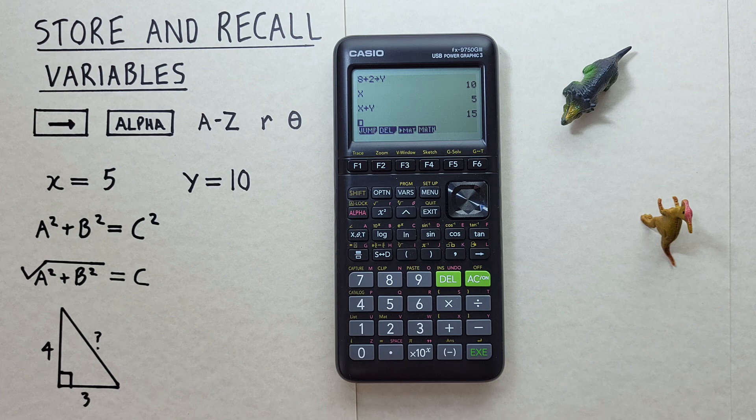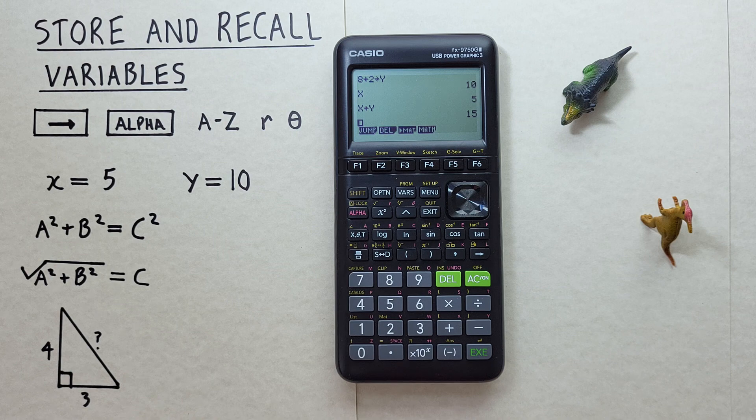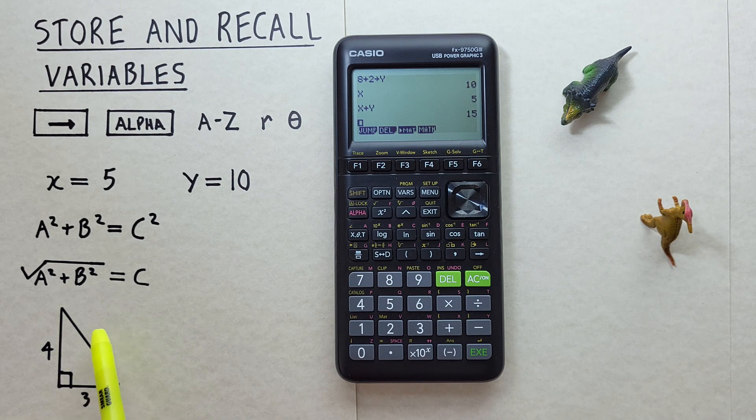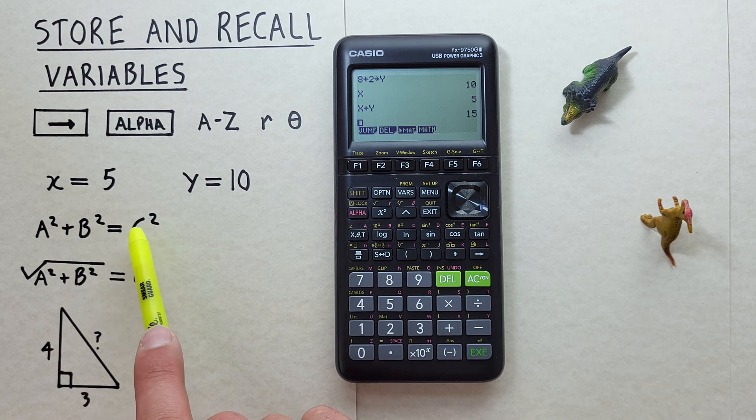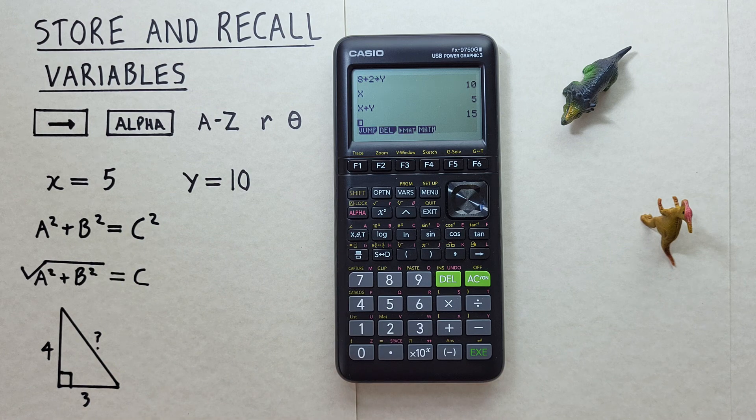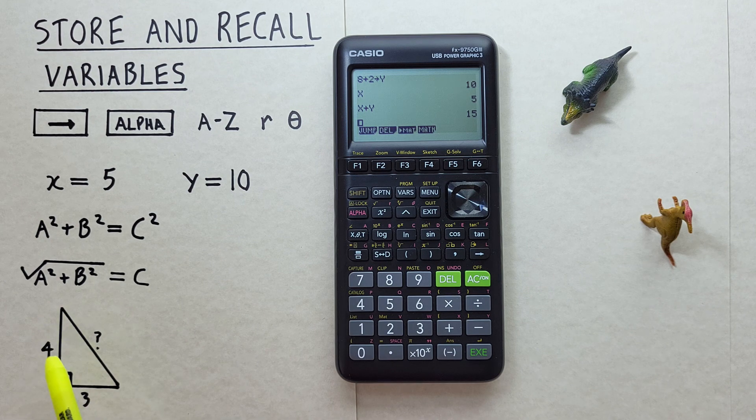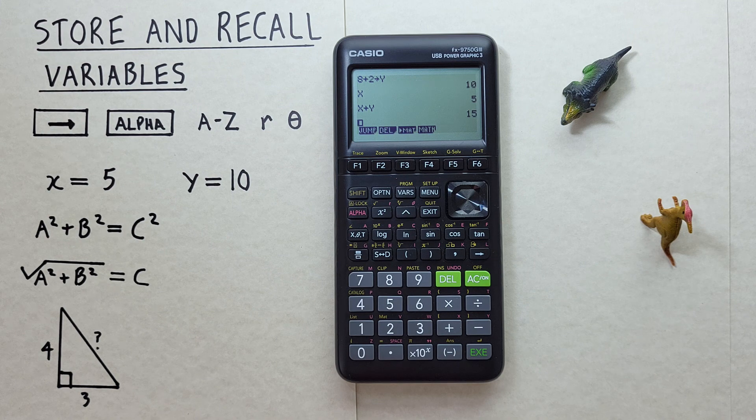This memory function is especially helpful for working with long or complex equations. For example, let's say we wanted to solve this right angle triangle for this side. We know with Pythagoras that A squared plus B squared equals C squared and can be rewritten as the square root of A squared plus B squared equals C. If we call this side A and this side B, we can enter that into our calculator using our memory function.